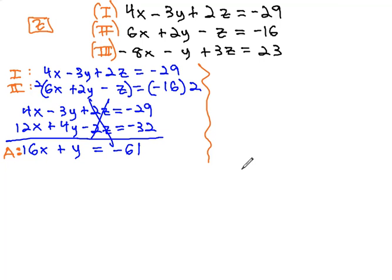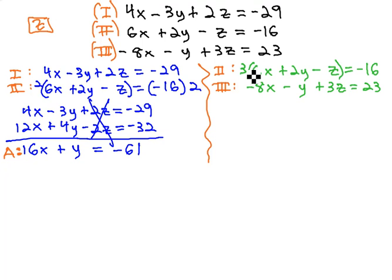To eliminate z a second time, we said we probably will do that with the second and third equations. So, let's do that with equations 2 and 3. Equation 2 was 6x plus 2y minus z equals negative 16. Equation 3, negative 8x minus y plus 3z equals 23, and to get opposites in front of z, we need to multiply by 3 on both sides.